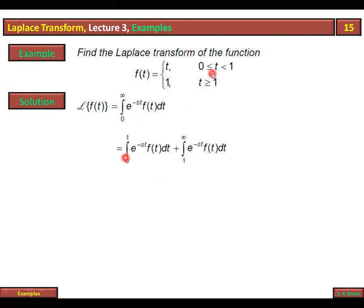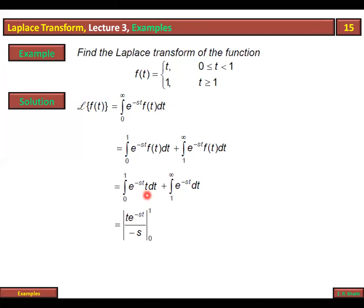Ab zero se one tak f(t) ki value t hai, to f(t) ki jagah t laga diya. One se onward f(t) ki value 1 hai, to wahan 1 laga diya. Integration by parts ke liye e^(-st) ko second function rakhte hain aur t ko first function. First function t, second function ki integration e^(-st) over (-s). Minus karke: derivative of t is 1, and second function integration is e^(-st)/(-s).